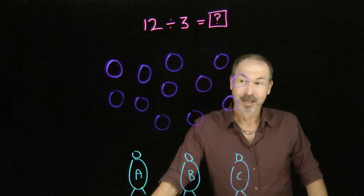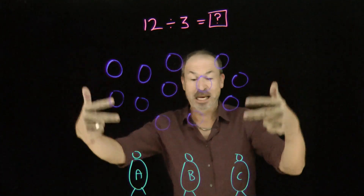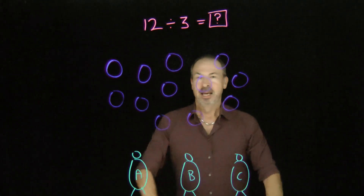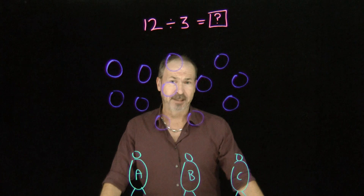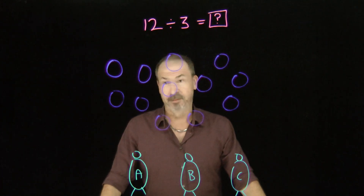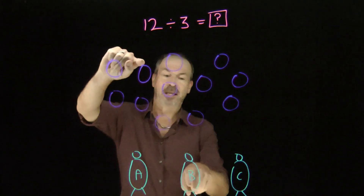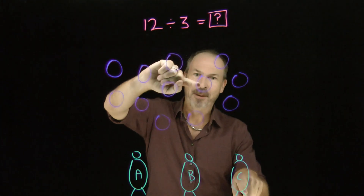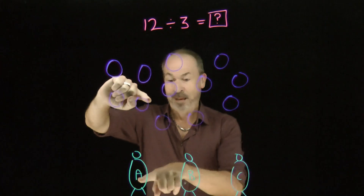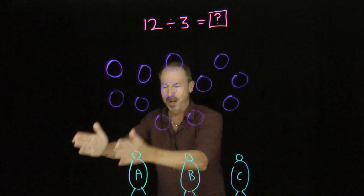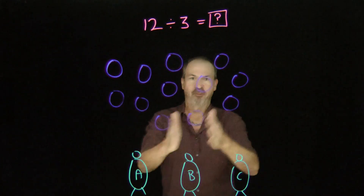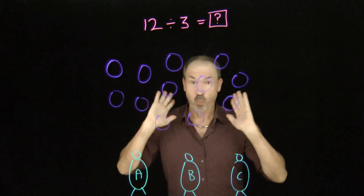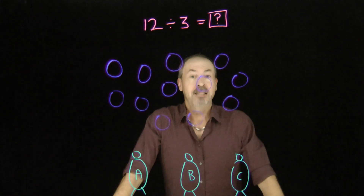Here are 12 pies to be shared equally amongst three people: Albert, Bilbert, and Cuthbert. How would we physically go about sharing those pies? One method — a little tedious, but you could do it — give a pie to Albert, give a pie to Bilbert, give a pie to Cuthbert, then give another pie to Albert, Bilbert, Cuthbert, and so on. Just march your way through giving one pie to each person in turn and repeating, and we'll see how many pies each person ends up with.